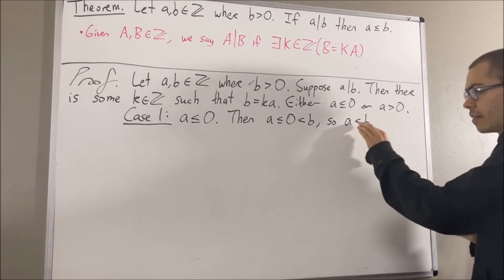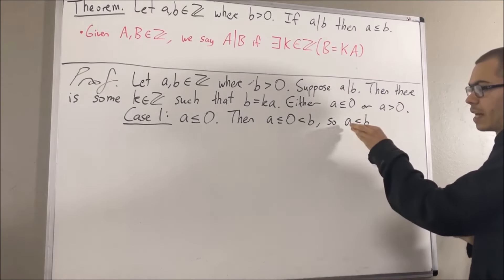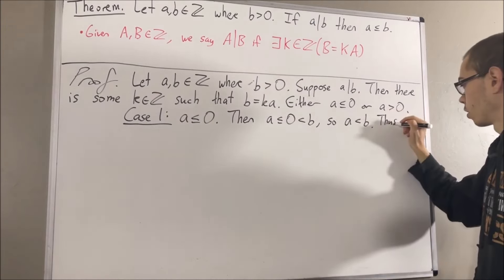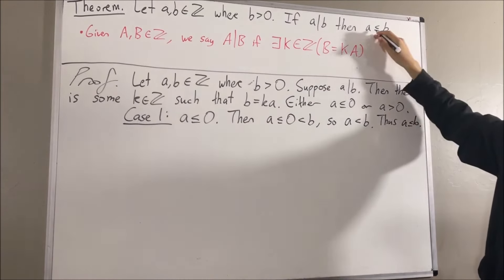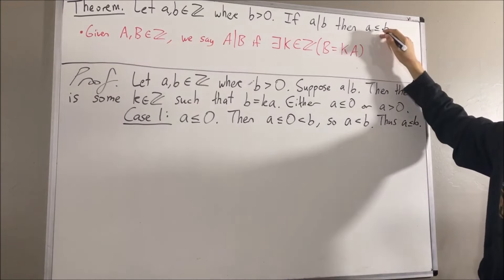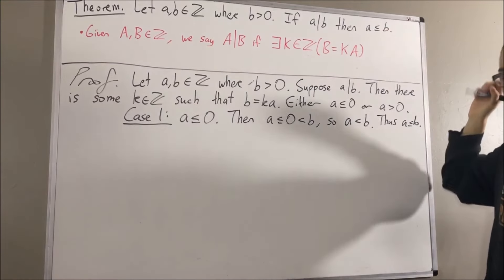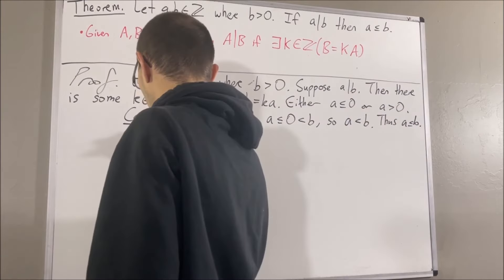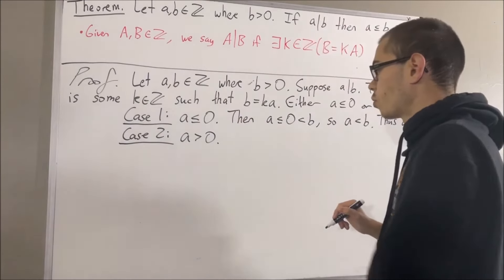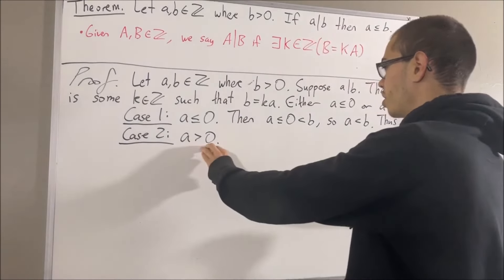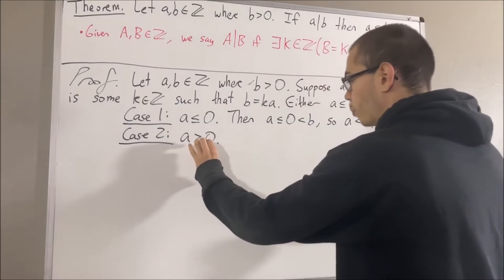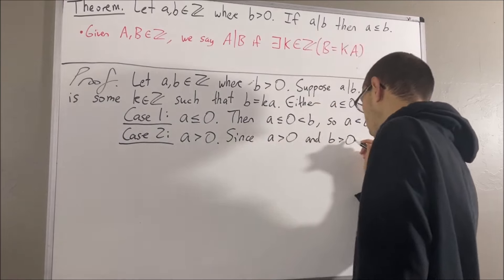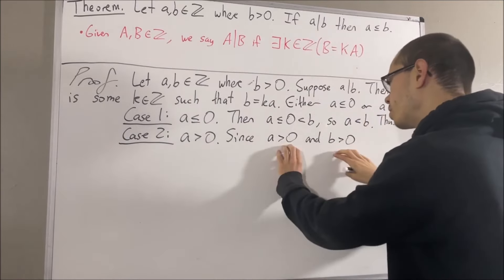This tells us that a must be strictly less than b, and since a is less than b, it follows that a is less than or equal to b. That is exactly what we wanted to show, so this completes case one. Now let's move on to case two where a is strictly greater than zero. In this case, notice we have that both a and b are greater than zero.